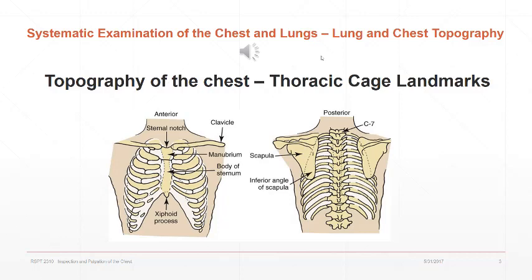The sixth rib is attached to the sternum just above the xiphoid process. On the back of the chest, we find prominent spinous processes at the base of the neck: the top one is the seventh cervical vertebra and the bottom one is T1. If you see only one spinous process, that's usually C7. This allows us to count the ribs on the posterior aspect of the chest to locate underlying structures.